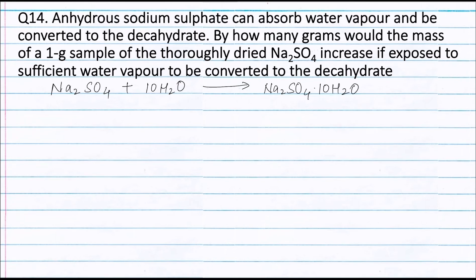As seen from the equation, 1 mole of sodium sulphate reacts with 10 moles of water to form 1 mole of sodium sulphate decahydrate. The weight of sodium sulphate taken is 1 gram, therefore moles of sodium sulphate is 1 divided by molecular weight of sodium sulphate, that is 142 grams.